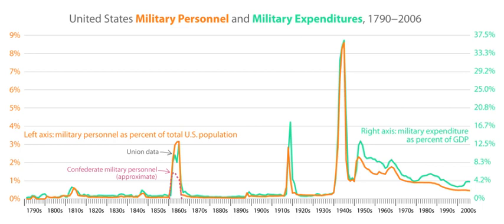The military history of the United States spans a period of over two centuries. During those years, the United States evolved from a new nation fighting Great Britain for independence, through the monumental American Civil War, and after collaborating in triumph during World War II, to the world's sole remaining superpower from the late 20th century to present. The Continental Congress in 1775 established the Continental Army, Continental Navy, and Continental Marines and named General George Washington its commander.